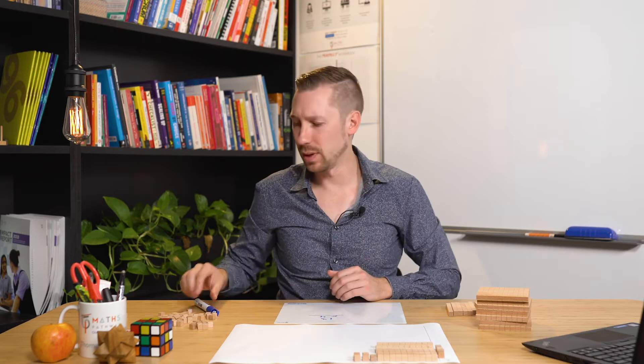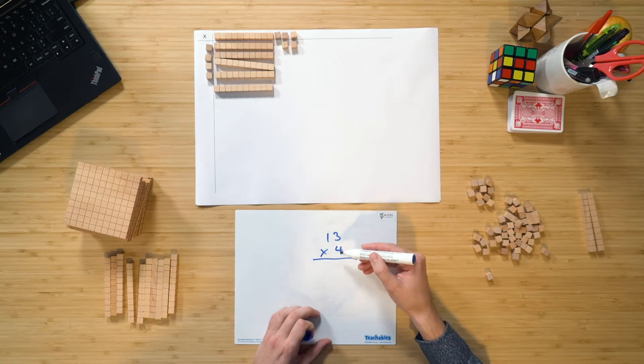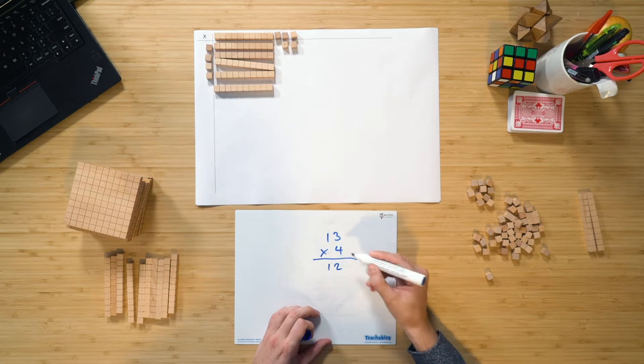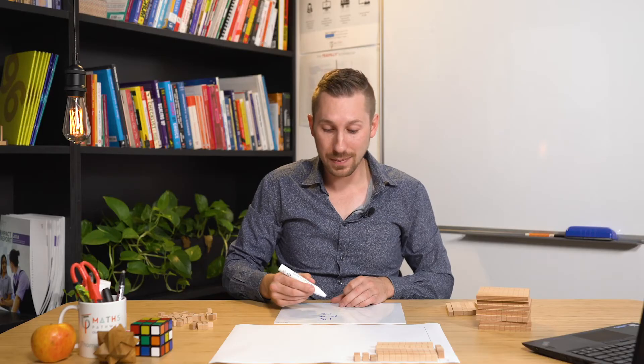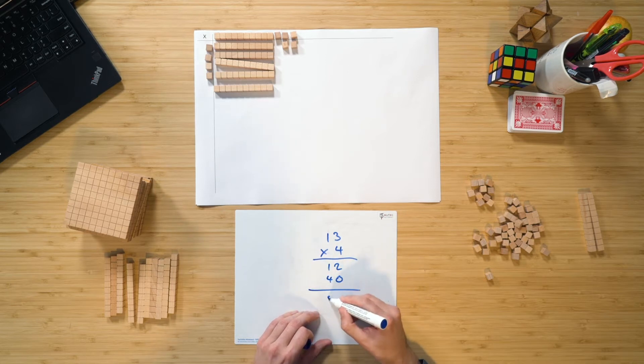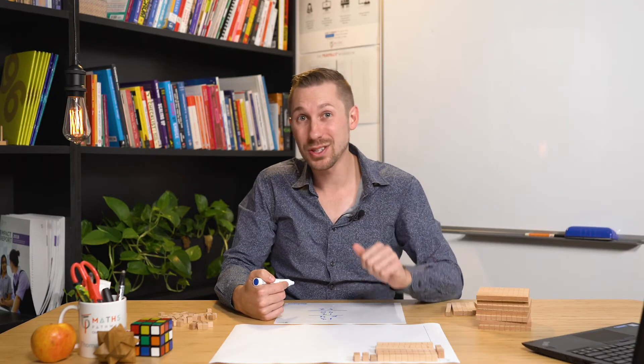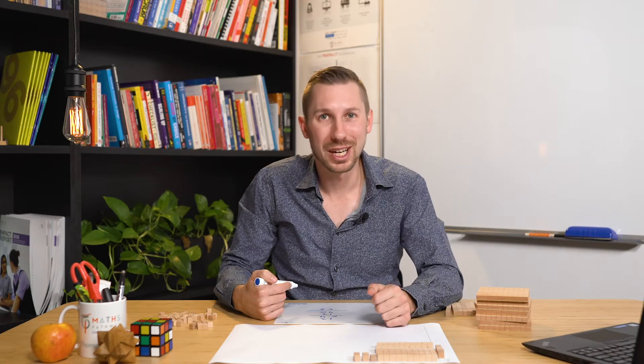Let's relate that back to the algorithm. If I have 13 times 4, we know the algorithm says 4 times 3 1s is 12 1s, and then 4 1s times 1 10 is going to be 40 or 4 10s. And 12 plus 40, of course, is 52. So as you can see, we can demonstrate what is going on in this algorithm to our students by using this model here.